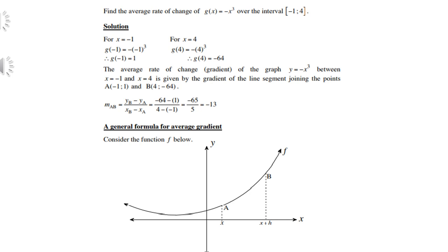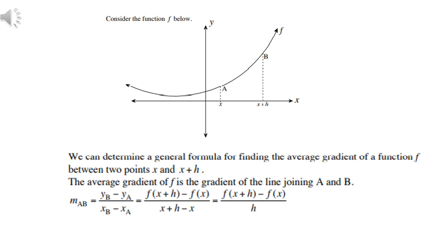Looking at the general formula for average gradient, consider the sketch. You will notice that point A's x value is x, and point B's x value is x + h. So the distance between x and x + h is h. The y value of B is f(x + h) and the y value of A is f(x).